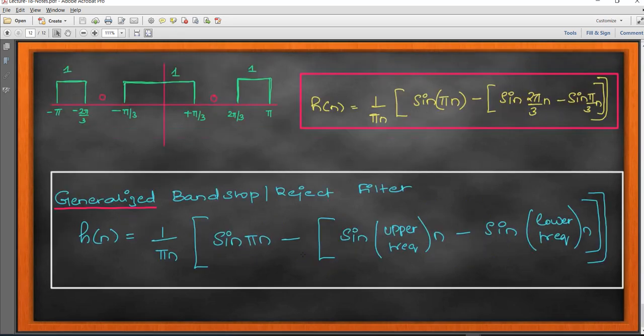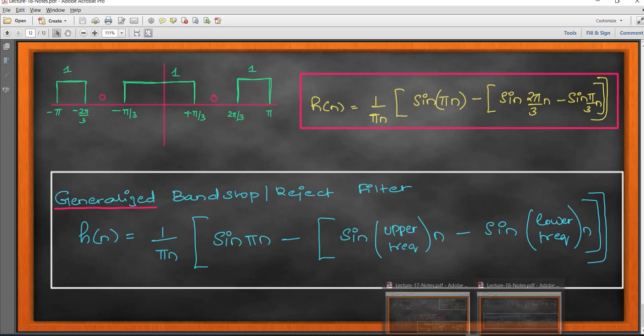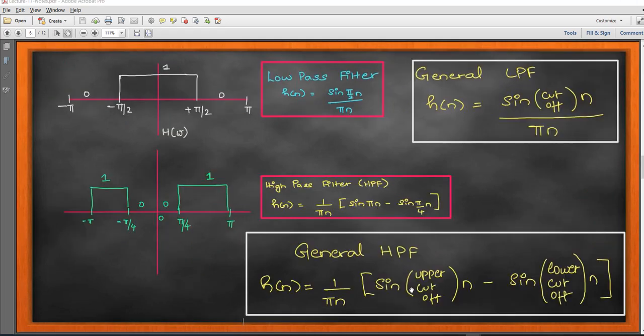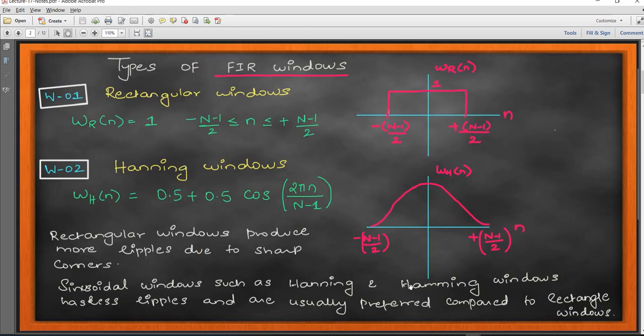The band stop or band reject filter is like a complement — one minus the band pass filter gives the band stop filter. In terms of h(n), it is (1/pi*n) * (sine(pi*n) minus sine of upper frequency minus sine of lower frequency of n). So these are the four filters: low pass, high pass, band pass, and band stop filter.